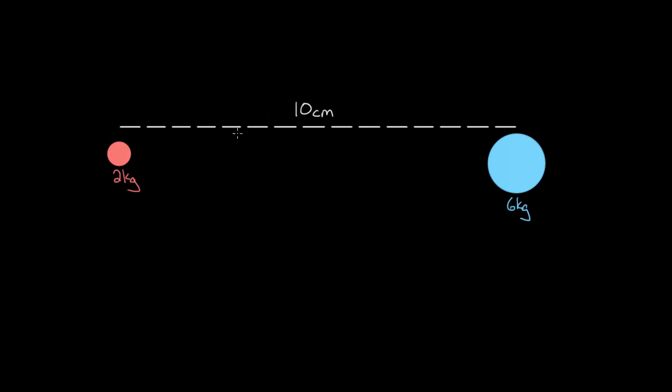So let's say you wanted to know where the center of mass was between this two kilogram mass and the six kilogram mass. They're separated by 10 centimeters, so it's somewhere in between them. And we know it's gonna be closer to the larger mass because the center of mass is always closer to the larger mass.